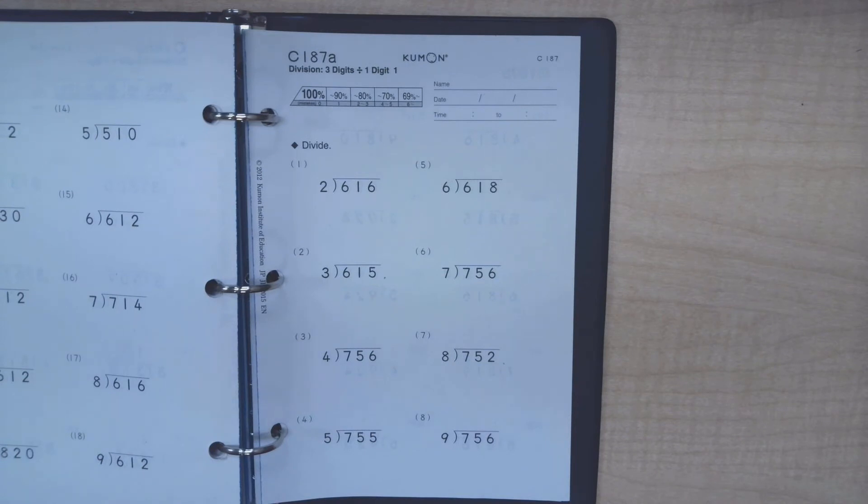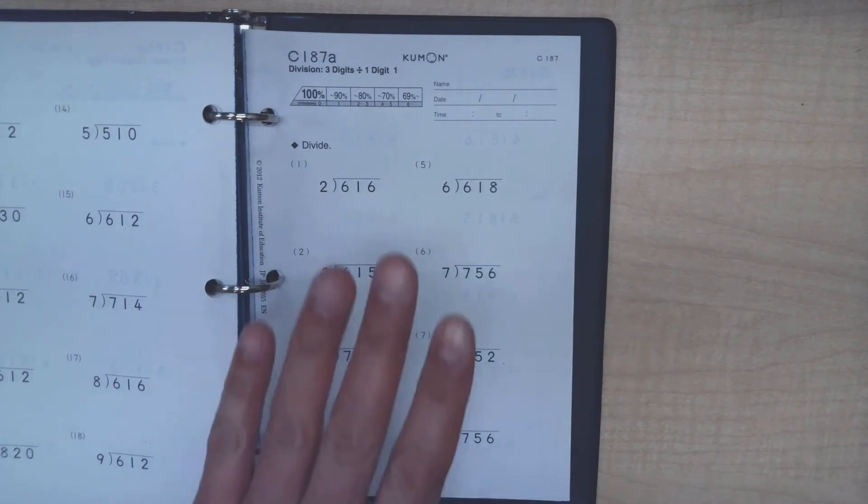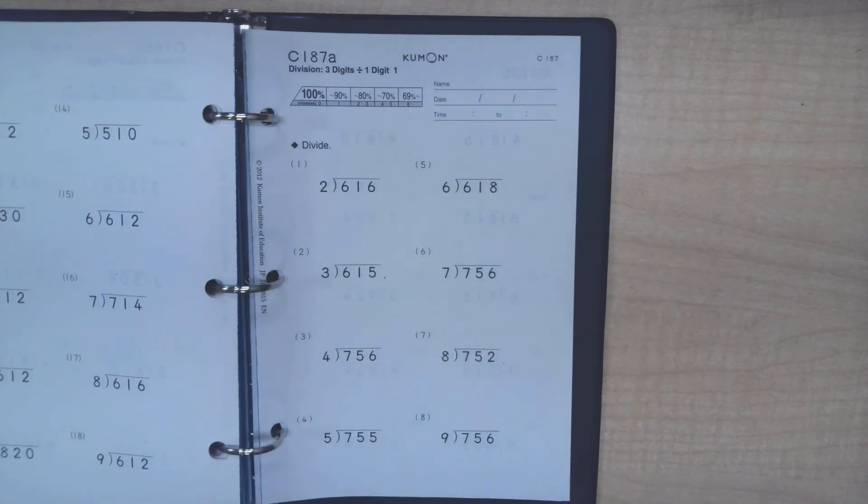So again, this is like part two of the three digit divided by one digit problems on pages C181 through the rest of this level. On the surface, everything looks very similar to the previous video.